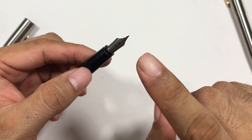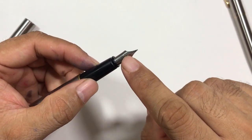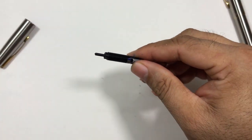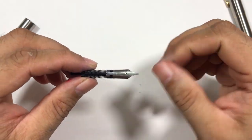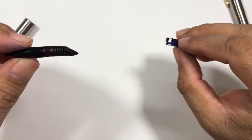This grip section, the nib feed, and the nib itself—this whole nib unit is Parker proprietary. So if I just pull this out, it comes out easily. You can see here in the feed it has these locks, small locks.